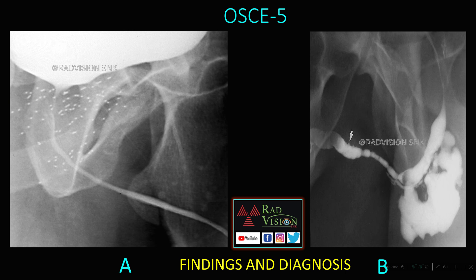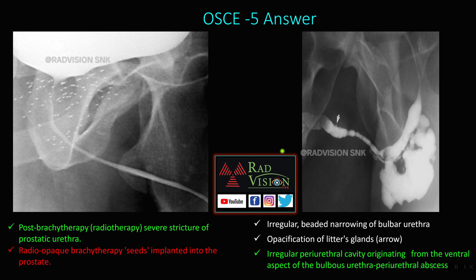Next, these are two cases: A and B. In case A, there is narrowing of the prostatic urethra with multiple hyperdense radio-opaque foci scattered in the prostate — these are radiopaque brachytherapy seeds implanted in the prostate. This is post-brachytherapy or radiotherapy-induced severe stricture of the prostatic urethra. In case B, there is irregular beading and narrowing of the bulbar urethra. Also visible are normal opacification of Littré's glands and an irregular periurethral cavity originating from the ventral aspect of the bulbar urethra, which is a periurethral abscess.